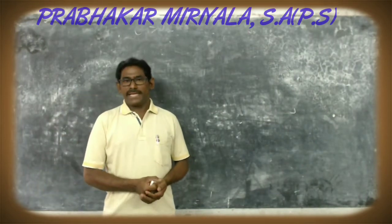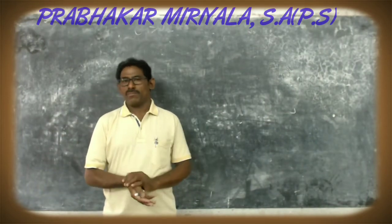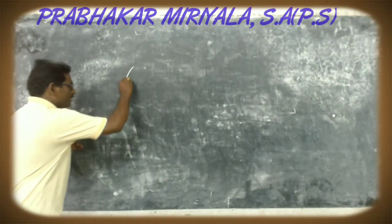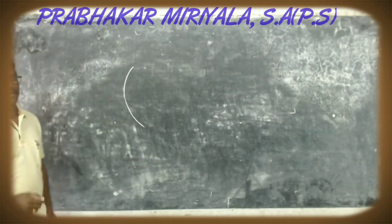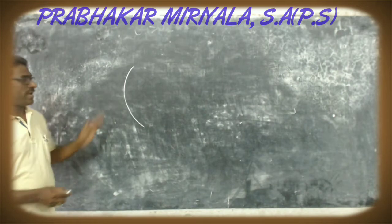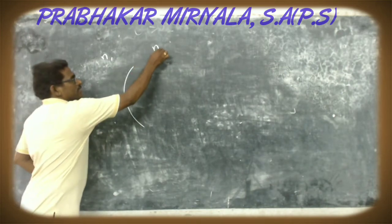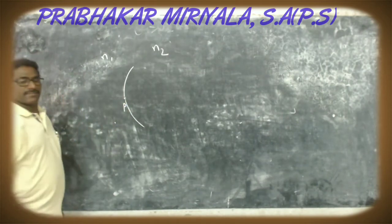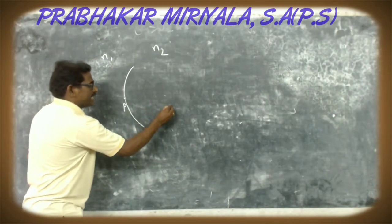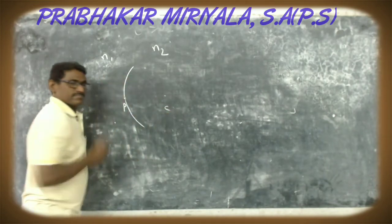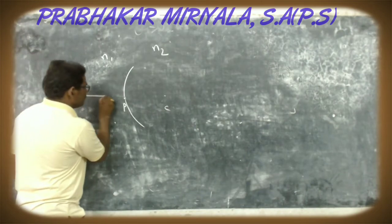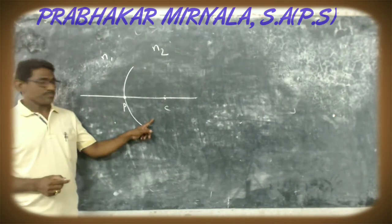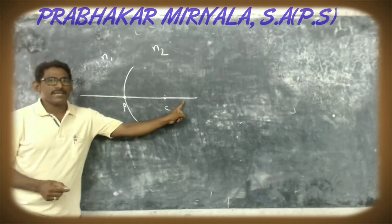We are going to derive the surface formula for a curved surface. Let us consider a curved surface which separates two different media of refractive indices N1 and N2. This is the pole of the curved surface and this is the center of the curved surface. The line joining the center of curvature and pole is called the principal axis.